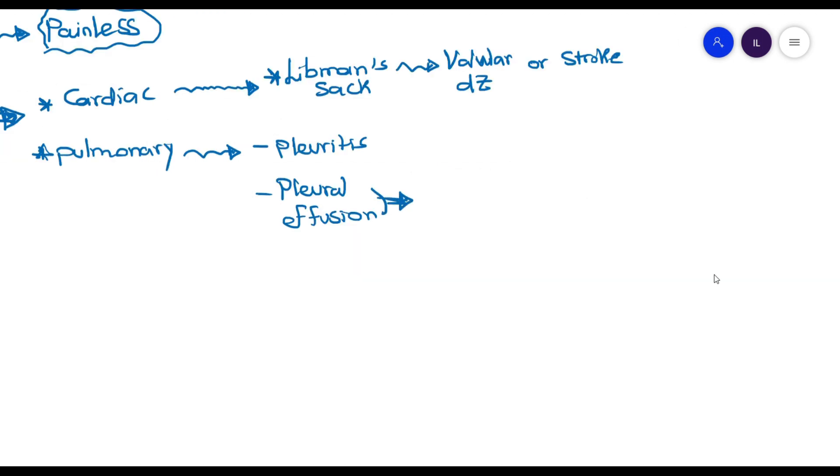The pleural effusion here is important to know that it is exudative and the patient will have bilateral involvement in addition to increased LDH. Compared to rheumatoid arthritis, the main distinctive feature is the glucose levels where they are slightly lower normal in SLE and very low in patients with rheumatoid arthritis.